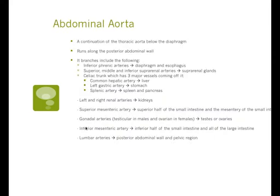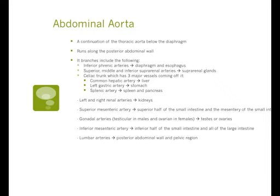The abdominal aorta is a continuation of the thoracic aorta, now below the diaphragm, running along the posterior abdominal wall. Its branches include the inferior phrenic arteries to the diaphragm and esophagus; superior, middle, and inferior suprarenal arteries to the suprarenal glands; the celiac trunk with three major vessels — the common hepatic to the liver, the left gastric artery to the stomach, and the splenic artery to the spleen and pancreas; left and right renal arteries to the kidneys; the superior mesenteric artery to the superior half of the small intestine; gonadal arteries — testicular in males and ovarian in females; the inferior mesenteric artery to the inferior half of the small intestine and all of the large intestine; and the lumbar arteries to the posterior abdominal wall and pelvic region.